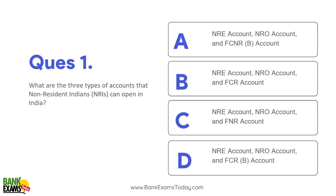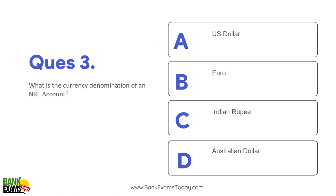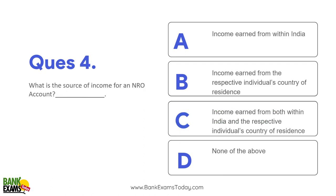Now let's do some questions. Question 1: What are the three types of accounts NRIs can open? Answer: NRO, NRE, and FCNR. Question 2: What is the currency of denomination of an NRE account? Answer: Indian rupees. Question 3: What is the source of income for an NRO account? It's income earned from within India — rent, dividend, pension — that's the Indian income.